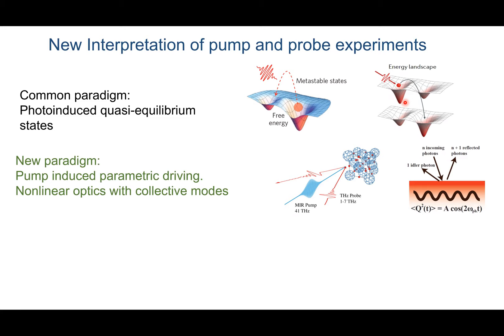In many cases we can get insight into the emerging properties of this transient state by thinking about the state in which we excited a collective mode — which in many cases is a phonon, or some other many-body collective excitation such as a Higgs excitation in the superconducting state or a plasmon.